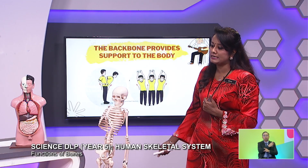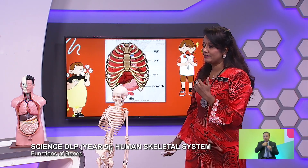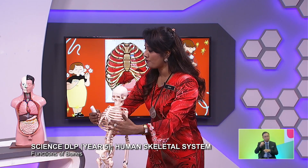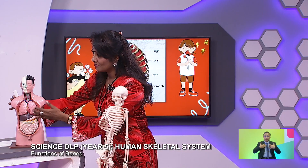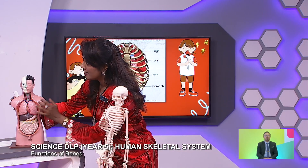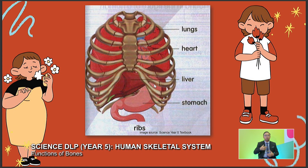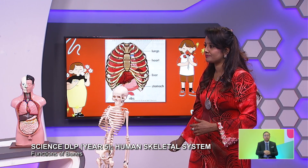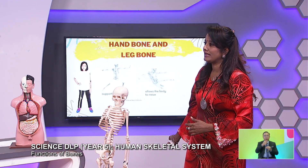Next, we are going to learn about ribs. When you look at the ribs, it protects our organs — lungs, stomach, liver, heart. Everything is protected by our ribs. These are the organs that are protected by our ribs here.